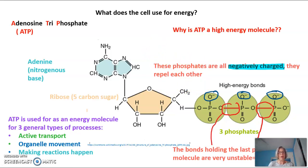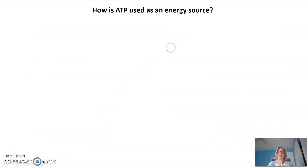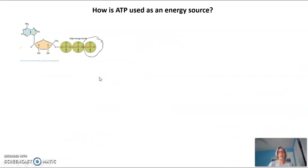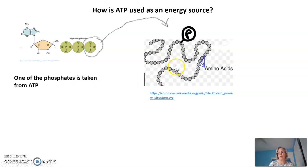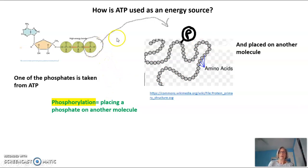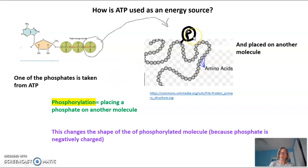ATP is used as an energy molecule for three general types of processes in the cell: active transport, organelle movement, and making reactions happen. How is ATP used as an energy source? That last phosphate on the ATP can be taken from the ATP and placed on another molecule — in this case, onto a protein. The act of taking a phosphate from ATP and putting it on another molecule is called phosphorylation. We would say that this protein has been phosphorylated. When you place a phosphate on another molecule, it changes the shape of that phosphorylated molecule because phosphate is very negatively charged. And as we know, when you change the shape of something, you change its function.